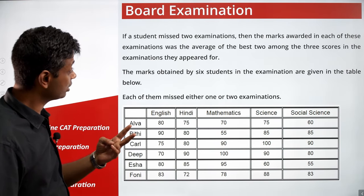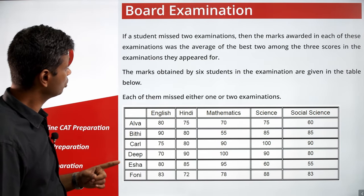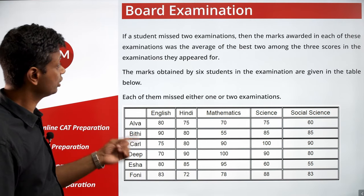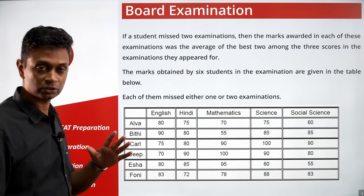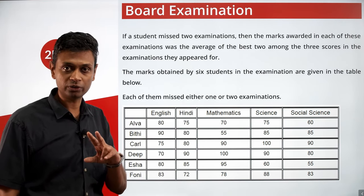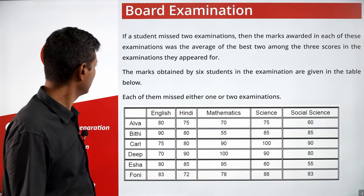If a student missed two examinations, the marks awarded in each of those was the average of the best two among the three scores in the examinations they appeared for. So three out of four or two out of three — take the average and put it outside.